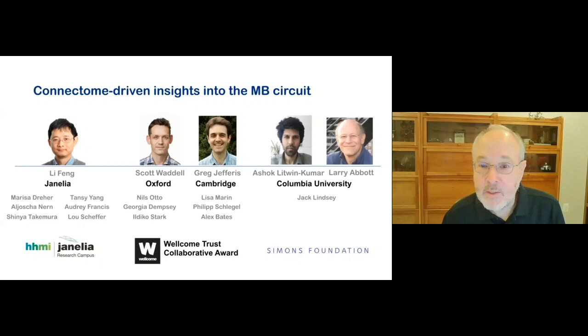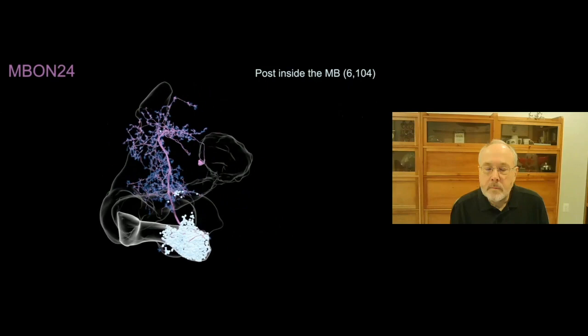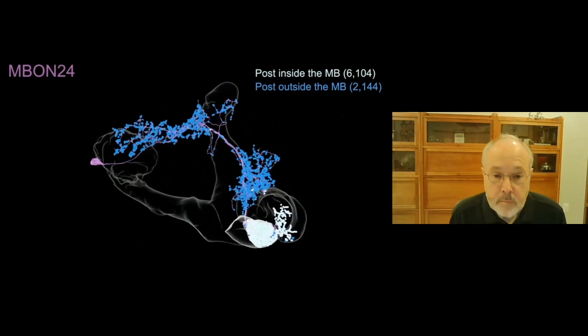To analyze the mushroom body circuit, we have brought together a collaborative team of experimentalists and theorists. Our goal is to gain insights in the circuit architecture and function. In the last few minutes of my talk, I will share some of the highlights of that work. We discovered a new class of mushroom body output neurons consisting of 13 cell types, one of which is shown here. The atypical mushroom body output neuron, MBON24, receives strong input from Kenyon cells in the beta 2 compartment of the mushroom body lobes.